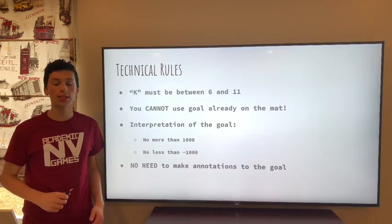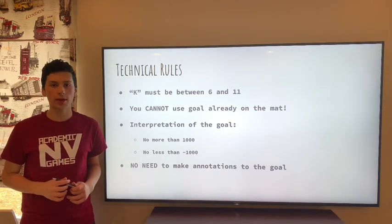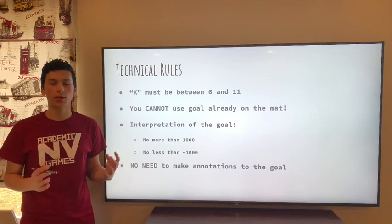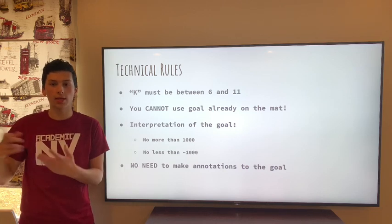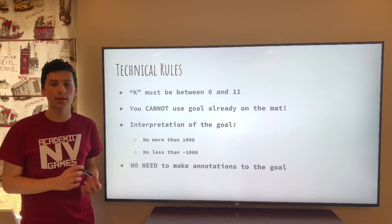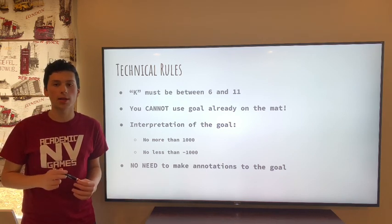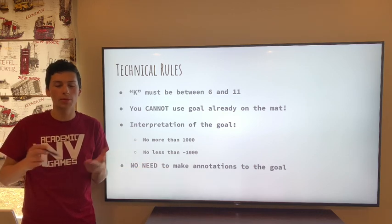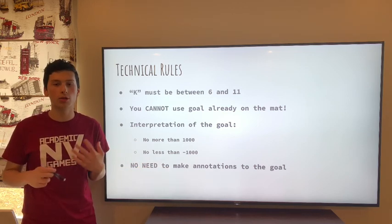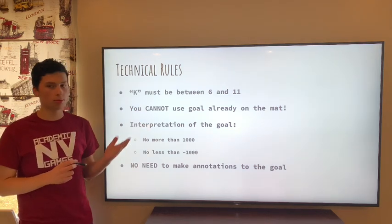So now we're going to go over some of the technical rules regarding this variation. So when you call multiple of k as a variation, you don't say multiple of k, you actually say multiple of k equals, and then you say a number. And that number can be between six and 11 inclusive. Remember, this is the number that you're adding or subtracting to your original goal however many times you want to find a new goal that you're going to write a solution for. So you must choose a number between six and 11.